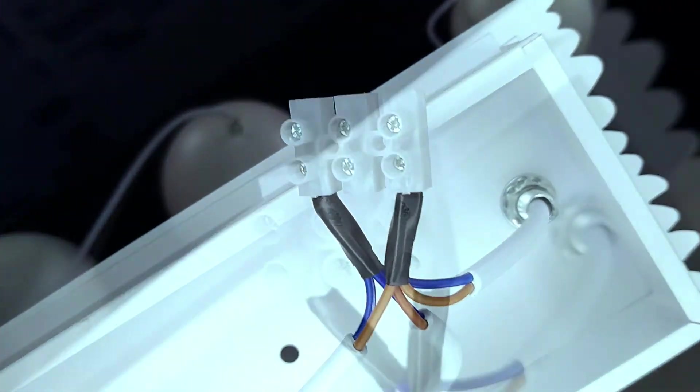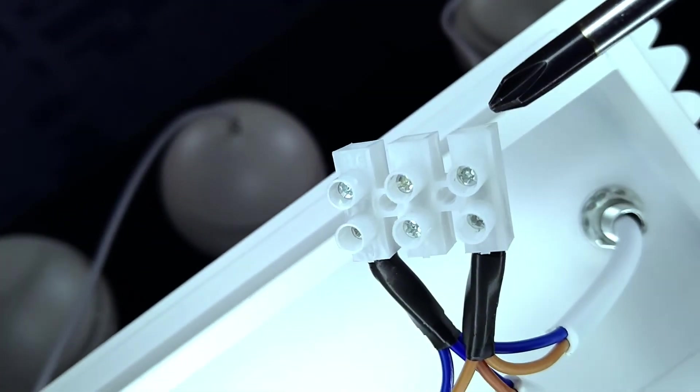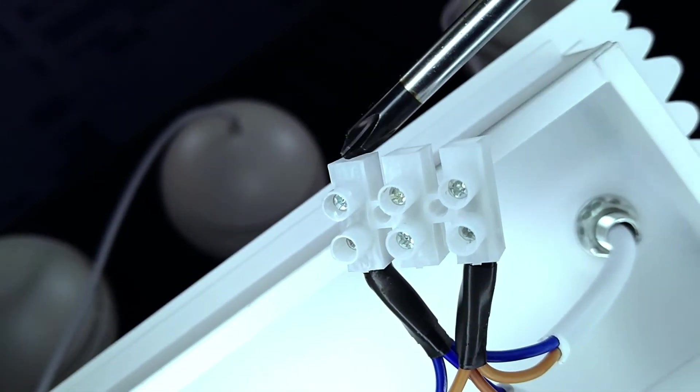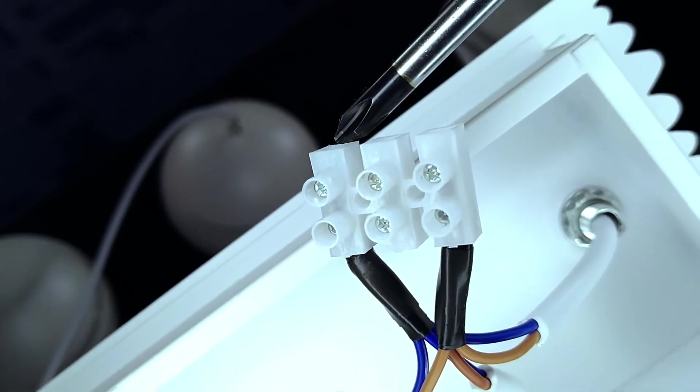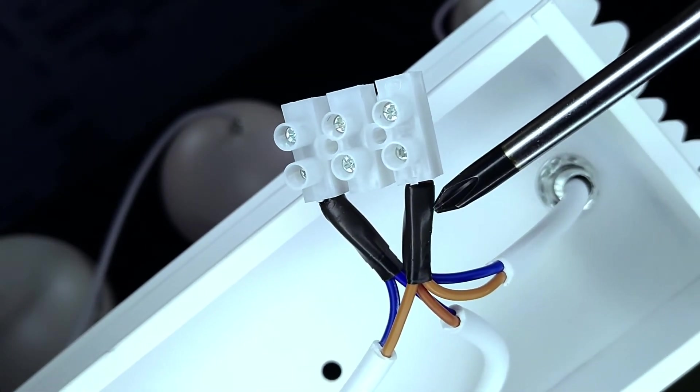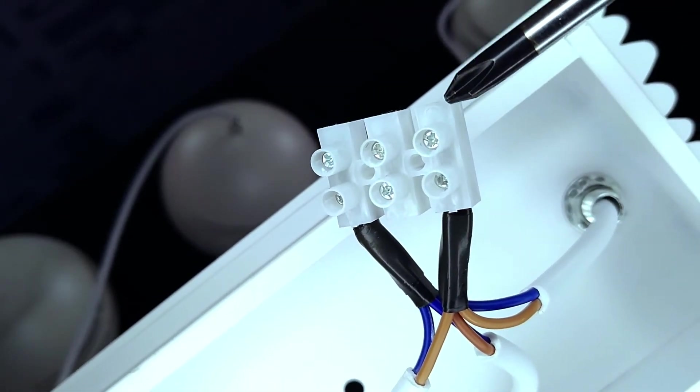After stripping a half inch off the two wires coming from the ceiling, I will connect one of them here and the other here. Doing so will complete our parallel circuit like I showed you in the diagram earlier.